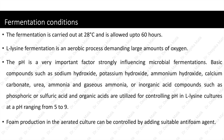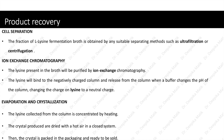After the production of lysine, the next step is product recovery. For cell separation, the fraction of L-lysine fermentation broth is obtained by suitable separating methods such as ultrafiltration or centrifugation. After cell separation, the lysine present in the broth is purified by ion exchange chromatography. The lysine binds to the negatively charged column and is released when a buffer changes the pH of the column, which changes the charge on lysine to a neutral charge. The lysine collected from the column is concentrated by heating. The crystals produced are dried with hot air in a closed system, then packed and ready to be sold.